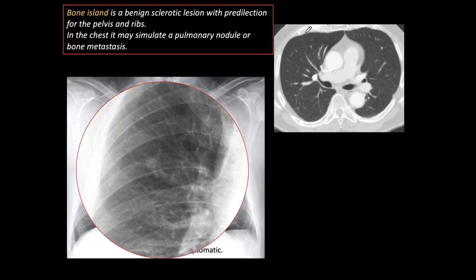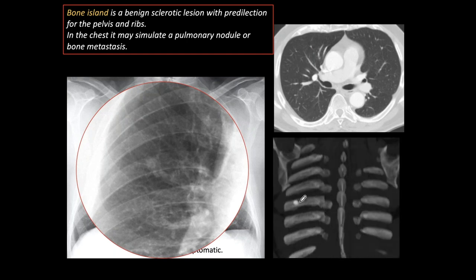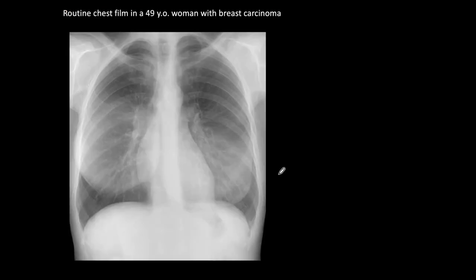When we do CT we don't see any abnormality in the chest in this area — no nodule. However, we see a small calcified sclerotic lesion, and in the coronal reconstruction it is obvious that it is a bone island in the seventh right rib. That is the typical appearance of the bone island. It can be suspected on plain film, and if not confirmed, CT is needed — and we have to think of that.